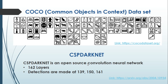When coming to CSP darknet, it is an open-source convolutional neural network developed in C++. It has a total of 162 layers, and detections are made at layers 139, 150, and 161 for large, medium, and small scale images respectively. This vector size is input to CSP darknet and it will lead to predictions. The detailed explanation can be found using the link provided in the description.